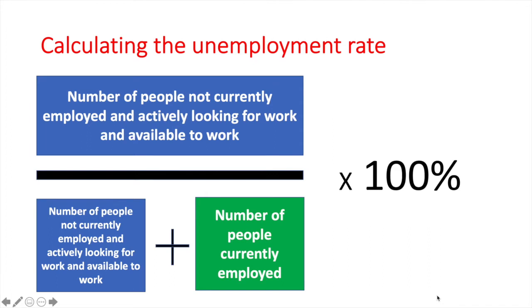Here's how to calculate the unemployment rate. The blue box represents the number of unemployed workers and the green box represents the number of people employed. On the top we have the number of unemployed people, and below that we have the labour force — the total of the unemployed and employed. You calculate this and then multiply by 100% to arrive at your unemployment rate.